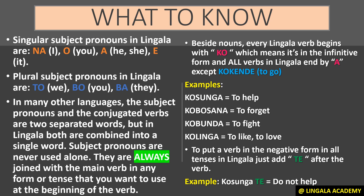I have grouped these into two categories. The first category is the singular subject pronouns in Lingala: 'na' means I, 'o' means you, 'a' means he or she, and 'e' means it — pronounced as 'e', not 'i'. The plural subject pronouns in Lingala are: 'to' means we, 'bo' means you, and 'ba' means they.